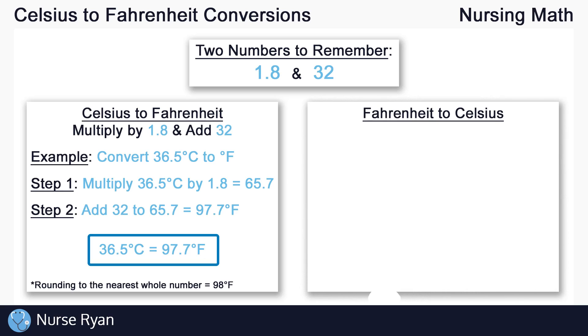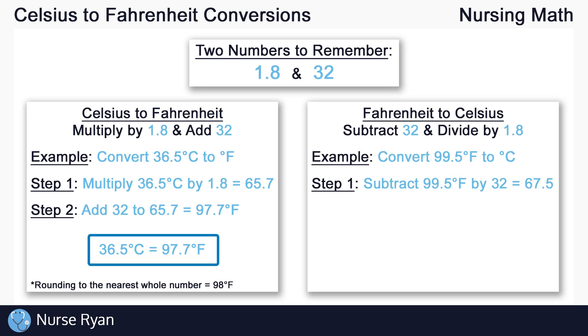And if we want to convert from Fahrenheit to Celsius, we have to do the reverse. Say we want to convert 99.5 degrees Fahrenheit into Celsius. Here, we would first subtract 32 from 99.5, giving us 67.5.